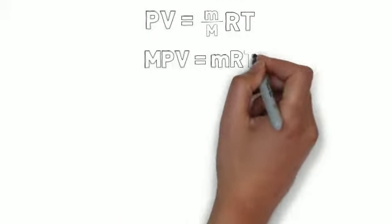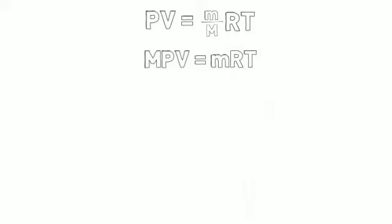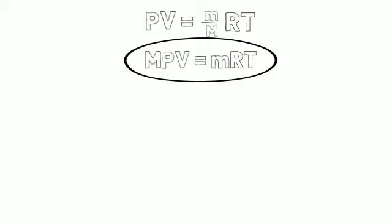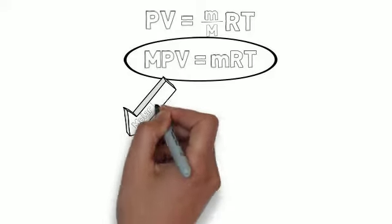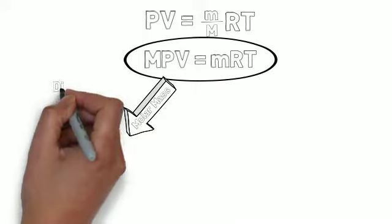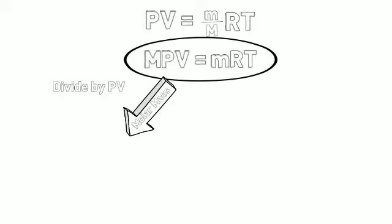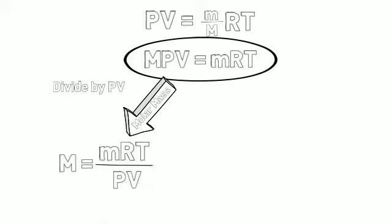We can rearrange this by multiplying both sides of the equation by capital M, and we get capital M times PV equals little m times RT. This equation can be used to either calculate the molar mass or the mass of an individual gas. If we want to calculate the molar mass, we divide by PV, giving us capital M equals little m times RT over PV. This is our equation for the molar mass of a gas, where capital M is the molar mass and little m is the mass.